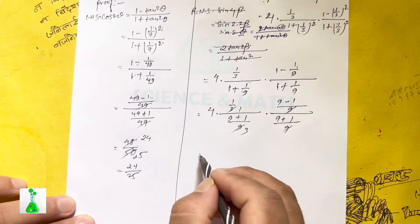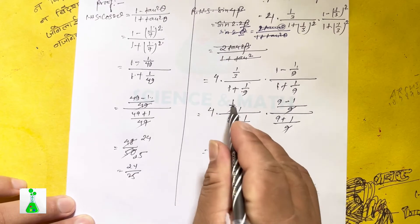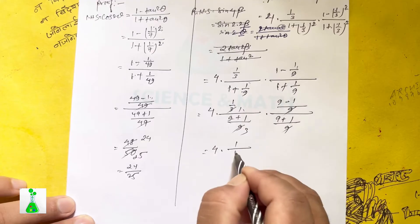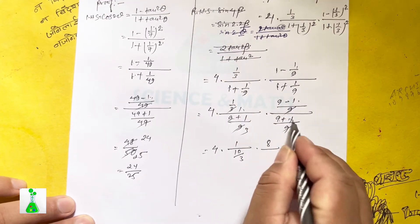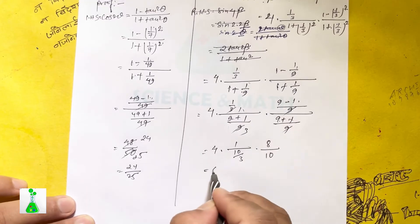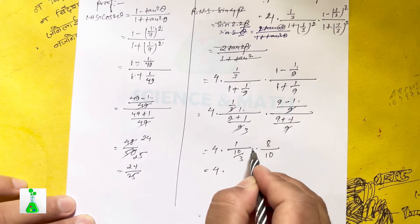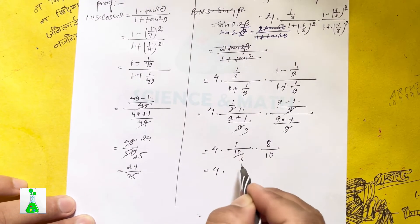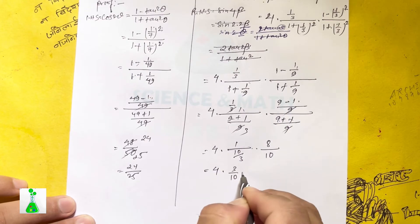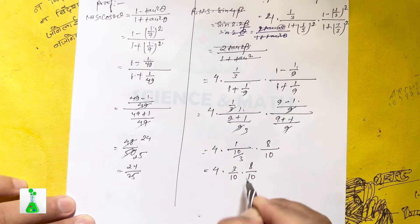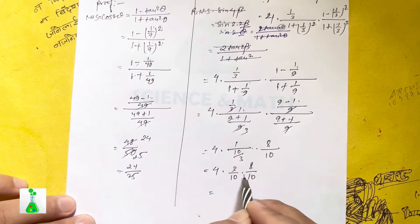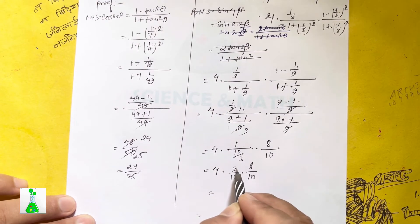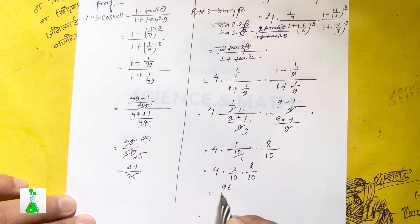Since 1 by 3 squared is 1 by 9: we get 4 into 1 divided by 3, times 9 minus 1 over 9 divided by 9 plus 1 over 9. That is 4 into 1 by 3 times 8 by 10 divided by 10 by 9, giving 4 times 1 by 3 times 8 by 10 into 9 by 10.